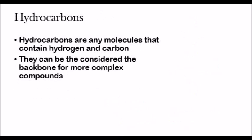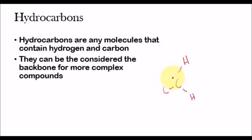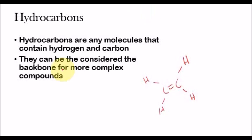Hydrocarbons are any molecules that contain both hydrogen and carbon. If a molecule is made up of just carbon and hydrogen, it is considered a hydrocarbon. For example, if you had a molecule like this, it could be considered a hydrocarbon because it's made up of just carbon and hydrogen. Any molecule that's made up of just carbon and hydrogen is a hydrocarbon. The reason why we're going to be talking about hydrocarbons is that they can be considered the backbone for more complex compounds.